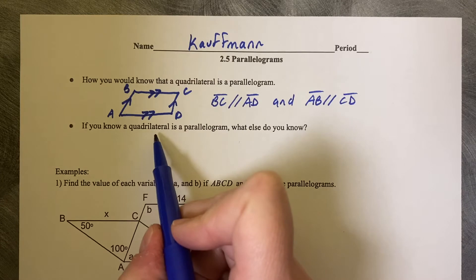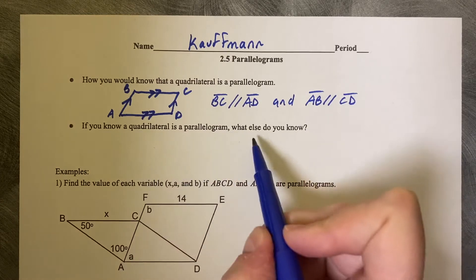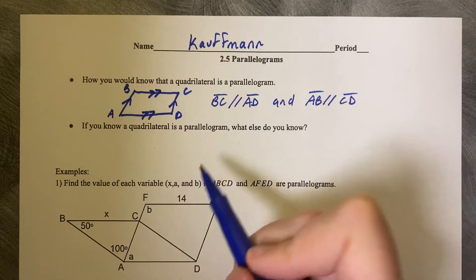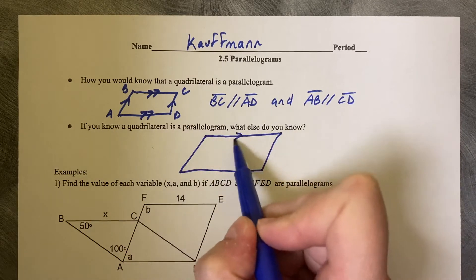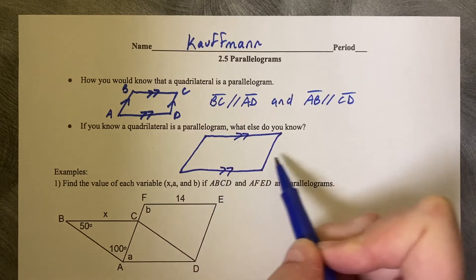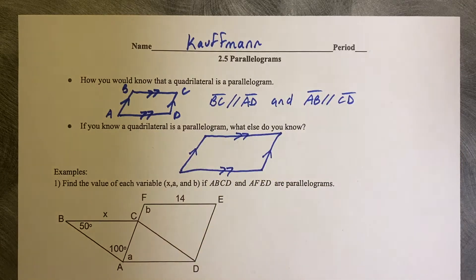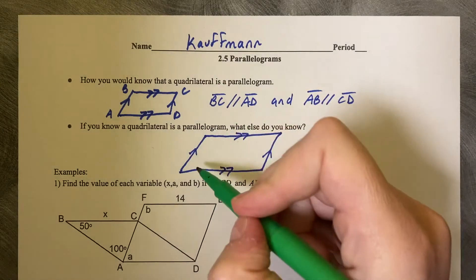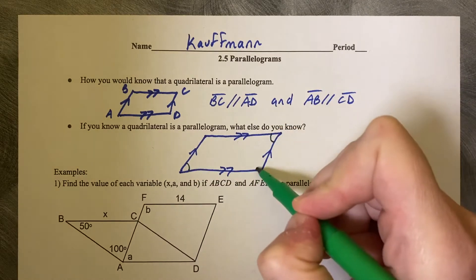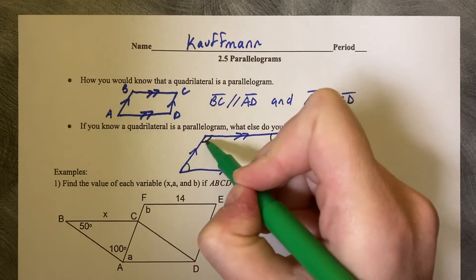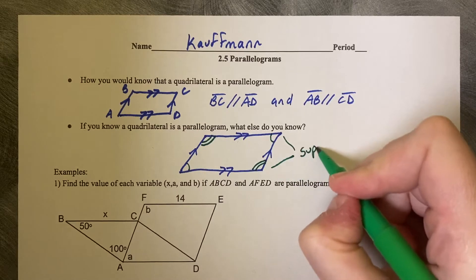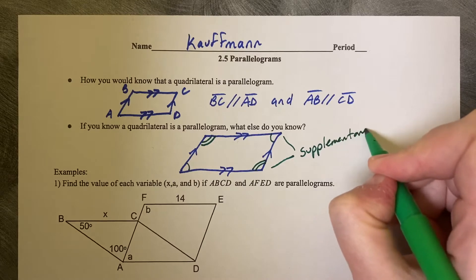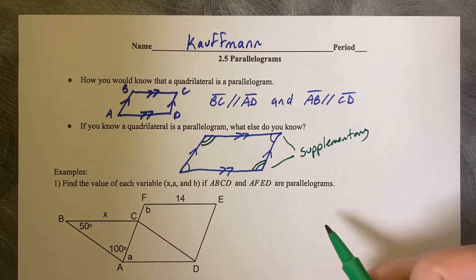And if you know a quadrilateral is a parallelogram, what else do you know? So much. So if we draw another parallelogram, make it a parallelogram first. So if you know that this is a parallelogram, there are many, many things that you know. First thing that you know is that opposite angles are congruent. Also, you know that these two angles are supplementary.